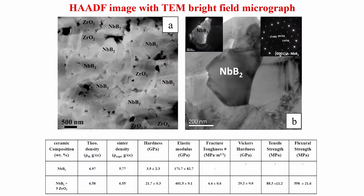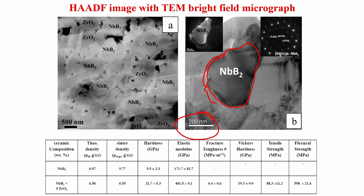In the HAADF images — high angle annular dark field — and the bright field TEM micrograph, you can see the presence of niobium boride and zirconia phase dispersed in the matrix. There are equiaxed grains of niobium boride roughly around 1 micron or less than 1 micron in size. The selected area diffraction pattern of the hexagonal niobium boride clearly shows it is retained along with zirconia.